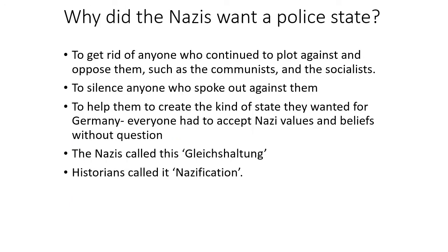So why did the Nazis want a police state? Why did they want police that are politicized, that they can use as a weapon? First of all, to get rid of anyone who continued to plot against and oppose them, such as the communists and the socialists, if they tried to reform. To silence anyone who spoke out against them. To help them create the kind of state they wanted for Germany — everyone had to accept Nazi values and beliefs without question. The Nazis called this Gleischaltung; historians called it Nazification. The German people had to submit to Nazi ideas and live the way the Nazis wanted them to live. If they stepped out of line, that's where the police and the authorities would come into play and would arrest anyone who went against Nazi ideas and Nazi vision for Germany.